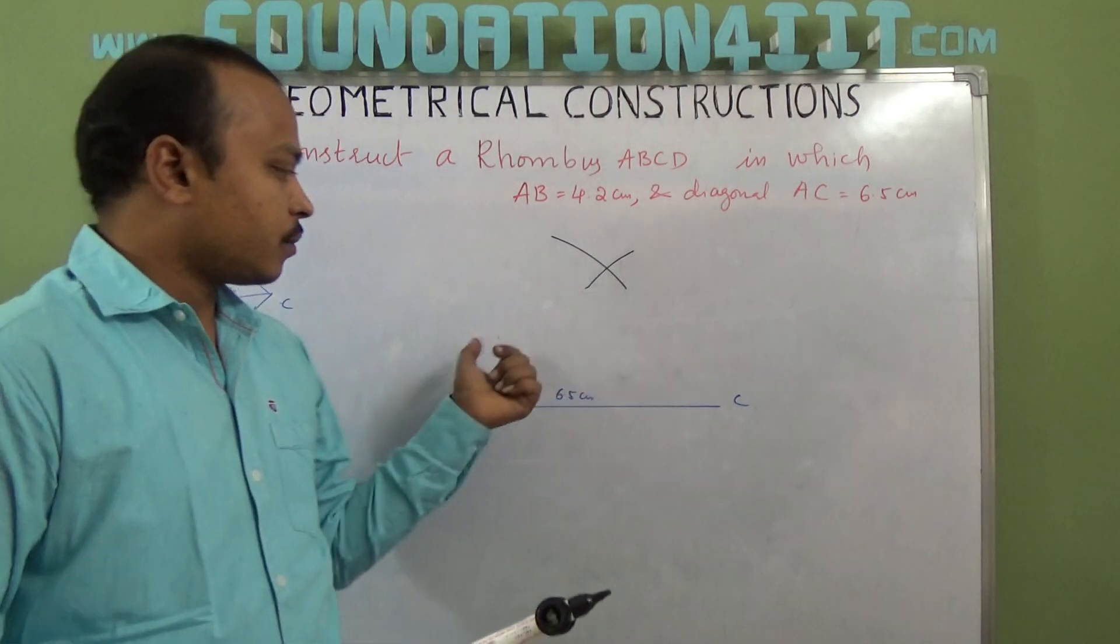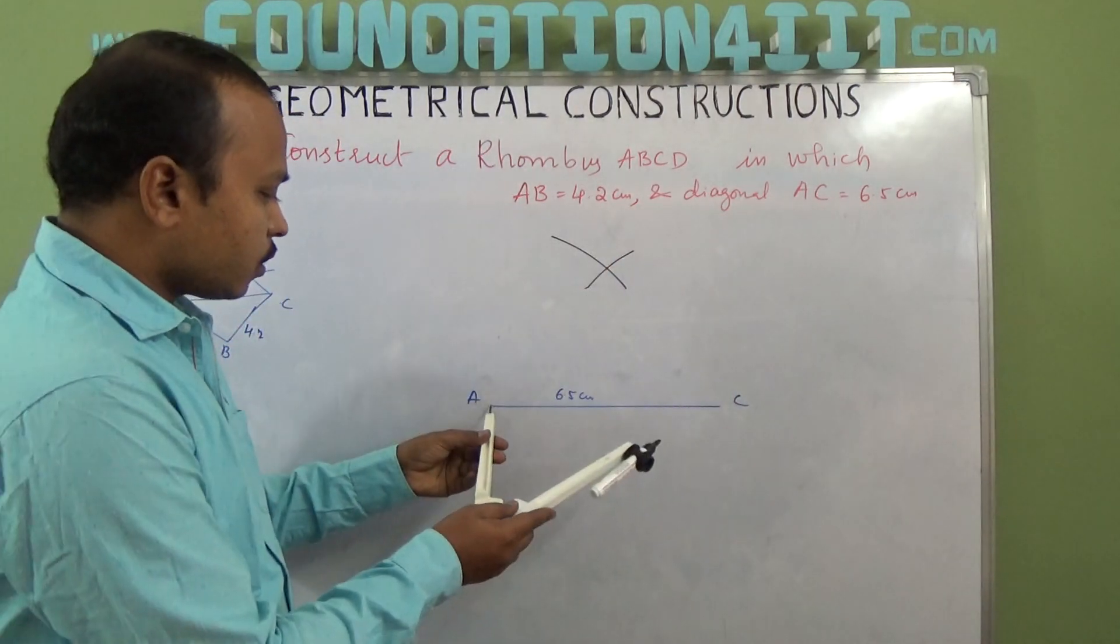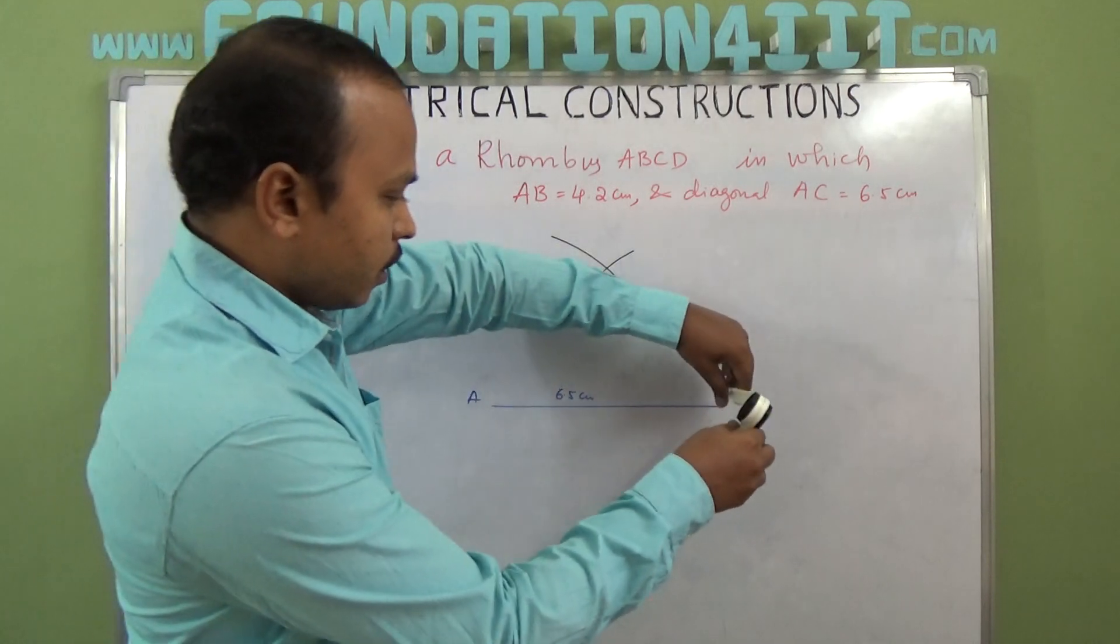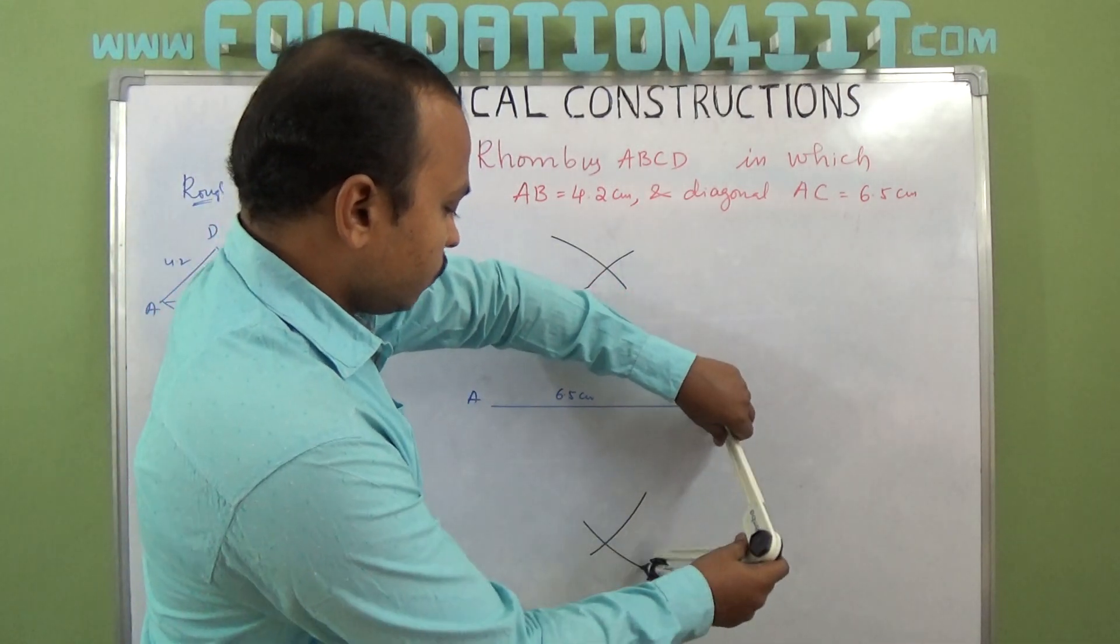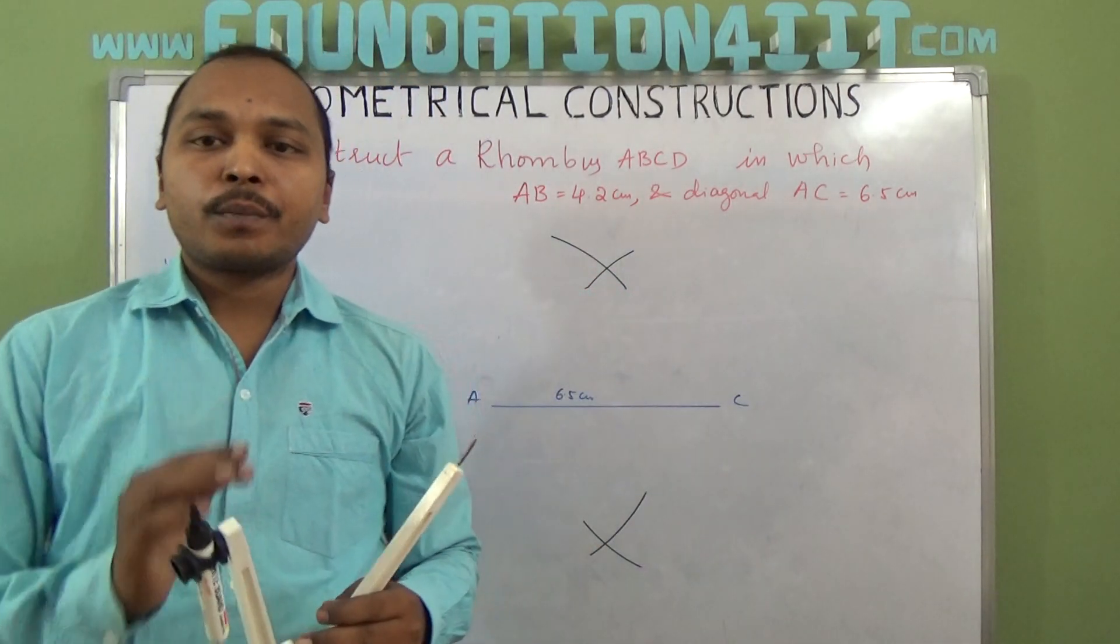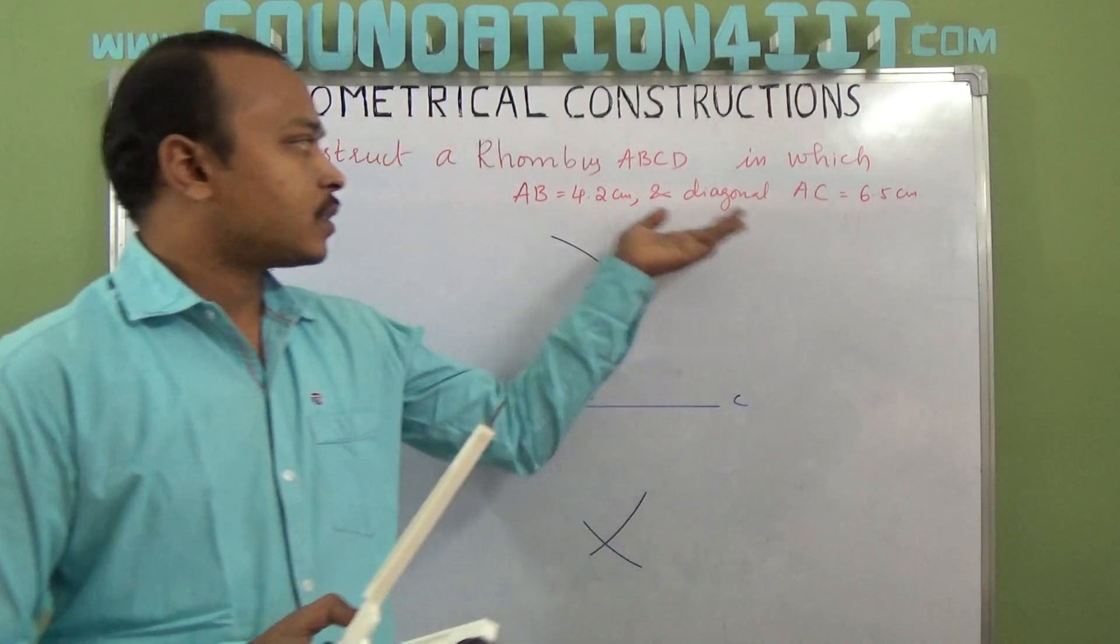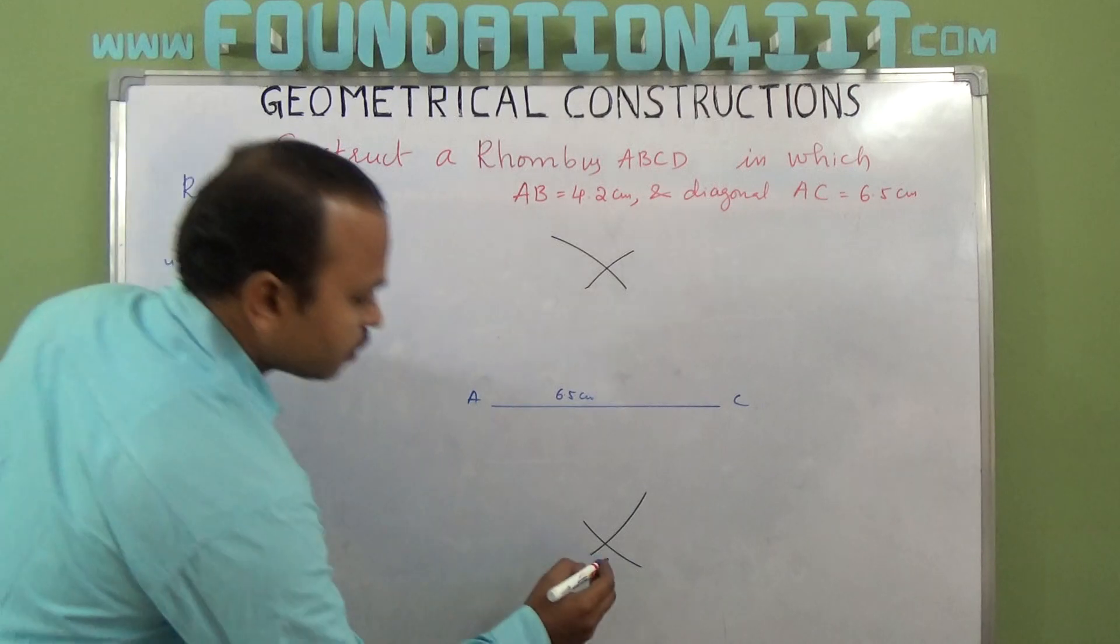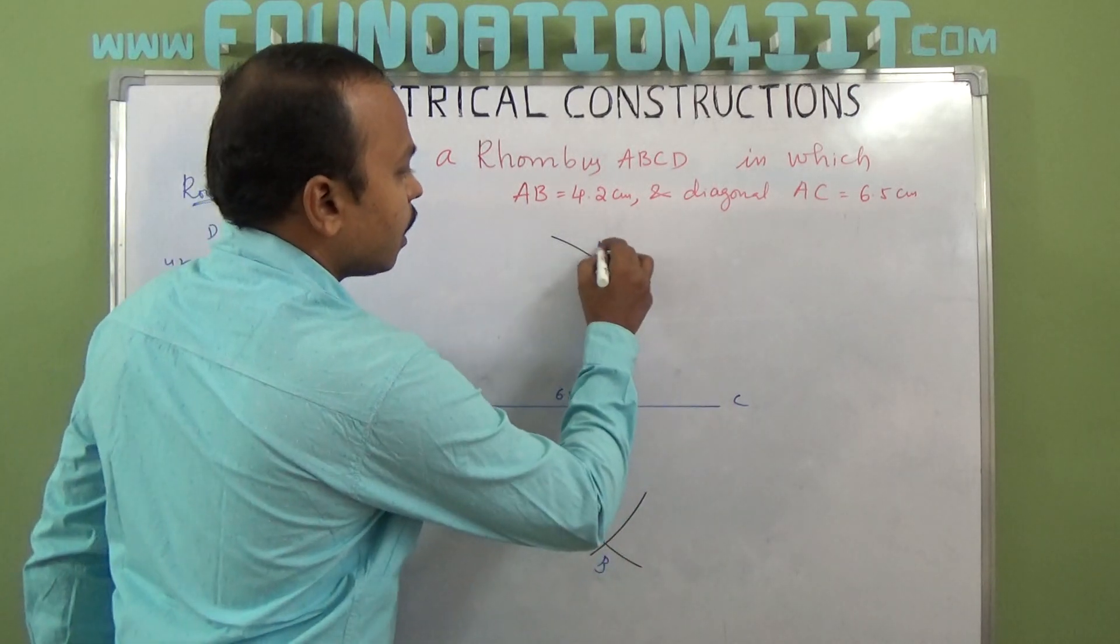Similarly, down also you can draw an arc from A and C. The distance is 4.2 centimeters. How much side is given, that much only should be taken.